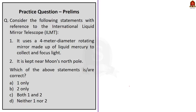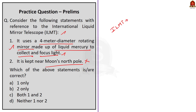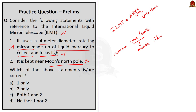The first question is about the International Liquid Mirror Telescope. Two statements are given. Statement 1: It uses a 4-meter diameter rotating mirror made of liquid mercury to collect and focus light. From our discussion, this statement is correct. Statement 2: It is kept near the Moon's north pole. This statement is incorrect — the ILMT is on Earth, kept at Devasthal Peak in the Central Himalayan Range, Uttarakhand. Also, on the Moon, liquid mercury would freeze; instead, low-temperature ionic liquids that do not evaporate would be employed. So Statement 1 is correct, Statement 2 is incorrect. The correct answer is option A — one only.